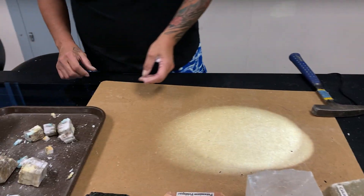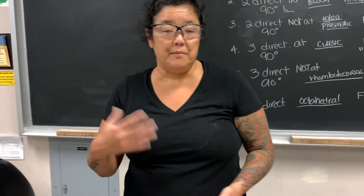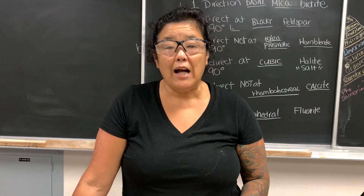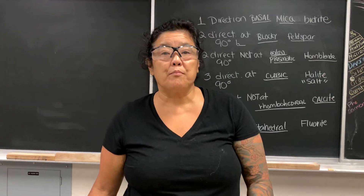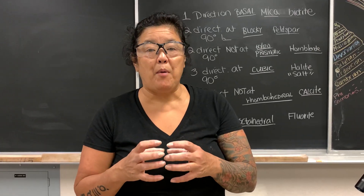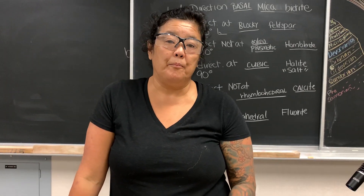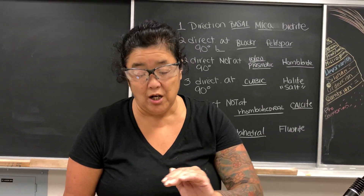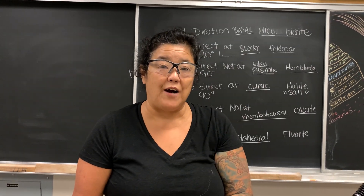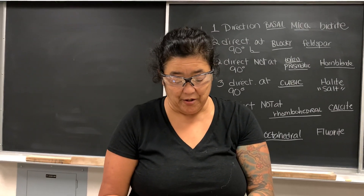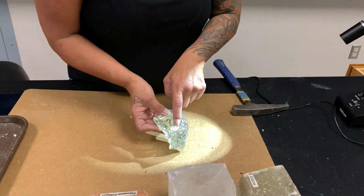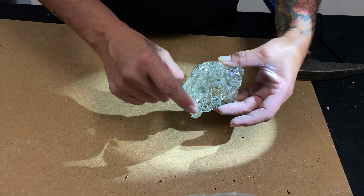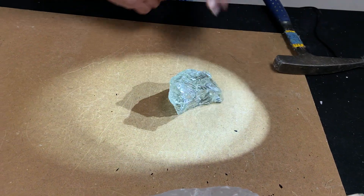As we move further into the mineral section of the lab, you'll learn that quartz — one of the most common minerals on the planet — doesn't actually have cleavage. Its atomic bonds are so strong that it doesn't have a cleavage plane. Instead, have you ever seen a broken Coke bottle with that clam-shell-shaped break? That's called conchoidal fracturing, and you'll see that with quartz. Quartz doesn't cleave — it fractures.